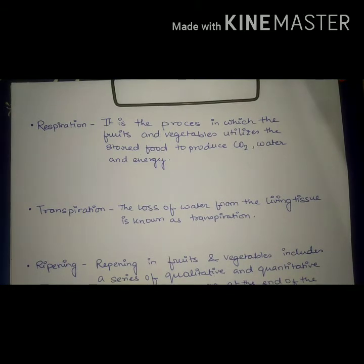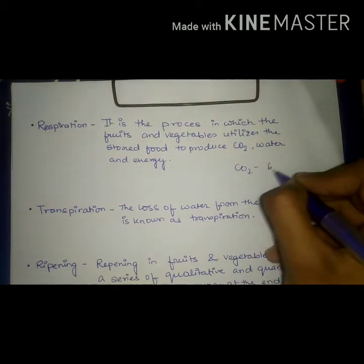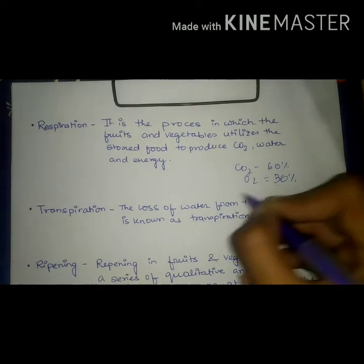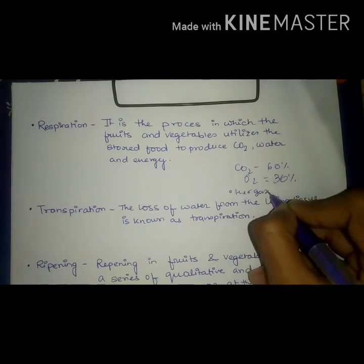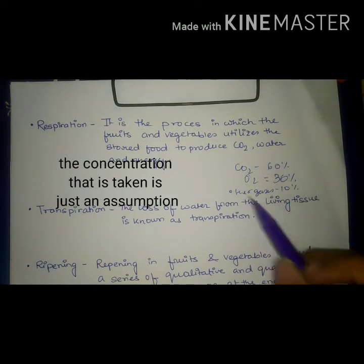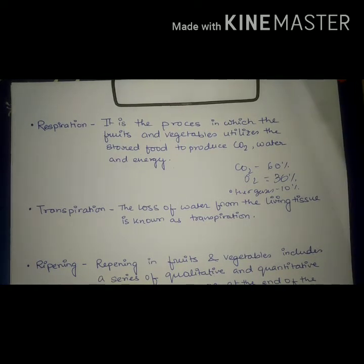Controlled atmosphere is the situation where the levels of gases are continuously monitored and adjusted to maintain the optimal concentration. For example, carbon dioxide 60%, oxygen 30%, and other gases 10% — this optimal concentration is maintained throughout the packaging or throughout the storage time.